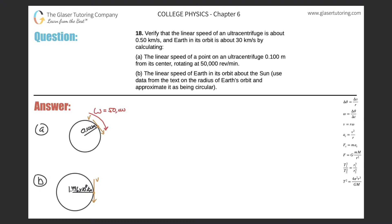Number 18. Verify that the linear speed of an ultracentrifuge is about 0.5 kilometers per second and Earth in its orbit is about 30 kilometers per second by calculating. Letter A: The linear speed of a point on an ultracentrifuge 0.1 meters from its center rotating at 50,000 revolutions per minute. Alright, so let's focus on A first.